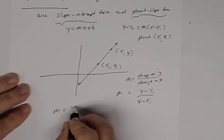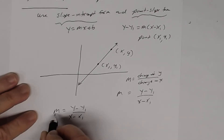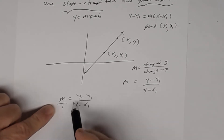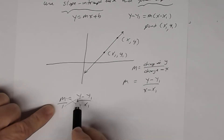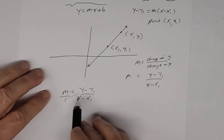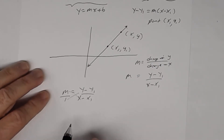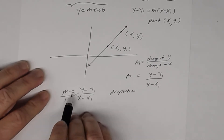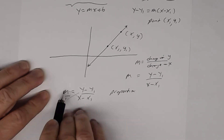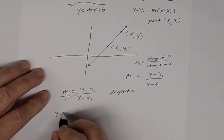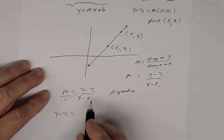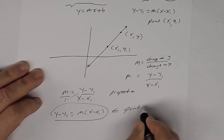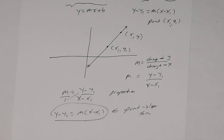Writing slope as m over 1 gives us a proportion — a ratio equal to a ratio. Cross-multiplying, we get 1 times y minus y1 equals m times x minus x1, which gives us y minus y1 equals m times x minus x1. That is point-slope form, and it comes directly from the slope formula.